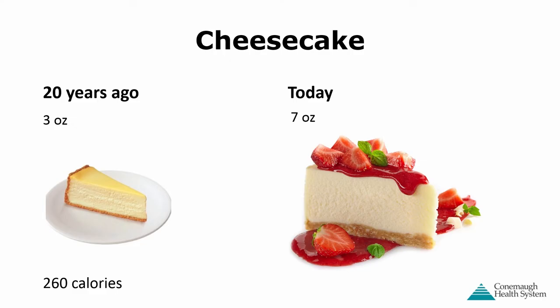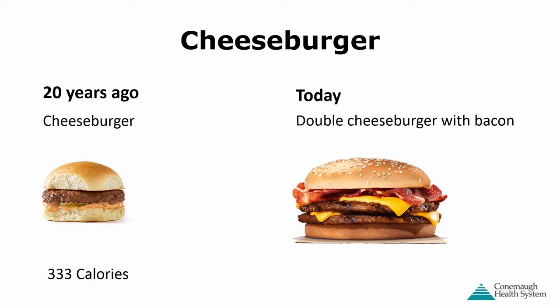Cheesecake: 20 years ago, a 3-ounce piece was a fairly common portion at about 260 calories; today it's 7 ounces and about double the calories. Cheeseburgers: 20 years ago, a plain cheeseburger was about 333 calories; today a double cheeseburger with bacon is over a thousand calories. We now have so many options — baconators, Whoppers, Big Macs — all stacking higher amounts of food between the bun, equating to a higher amount of calories.